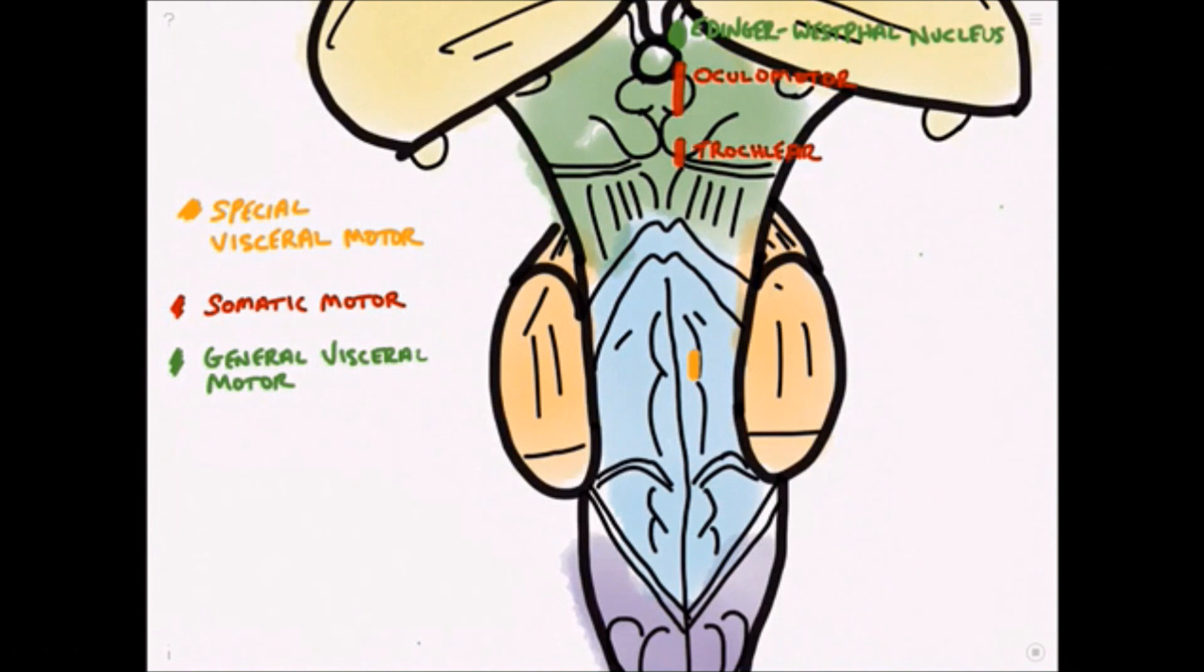The trigeminal nucleus is involved in the muscles of mastication, or chewing, and the abducens nucleus gives us the abducent nerve which is responsible for abducting the eye.